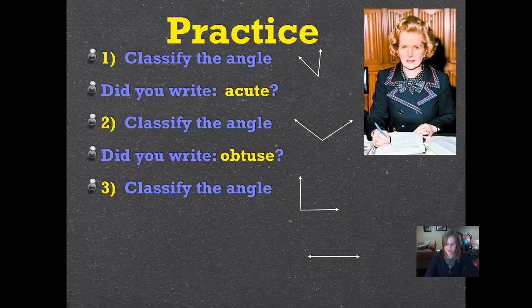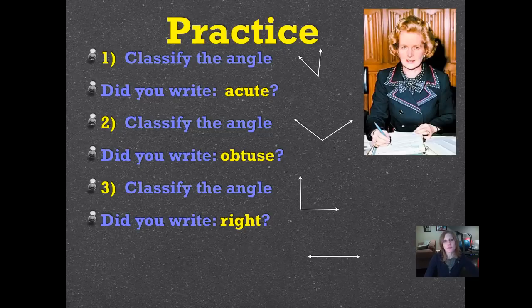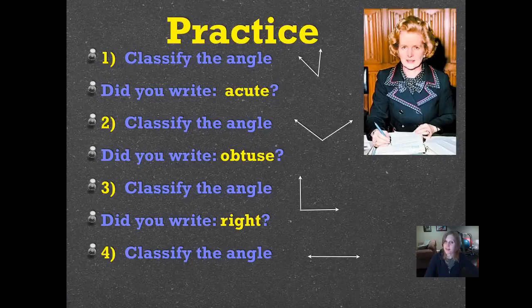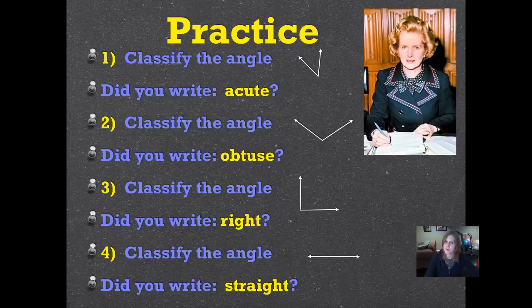Let's try another one. Classify the angle. Did you write right? That doesn't sound grammatically correct, but it is. Did you write the word right, that it's a right angle? It's got square corners, 90 degree angles. Number four, classify the angle. Did you write straight? That's a straight angle. That's easy to check. You can hold your pencil up next to that or your piece of paper and see that it's a perfectly straight line.